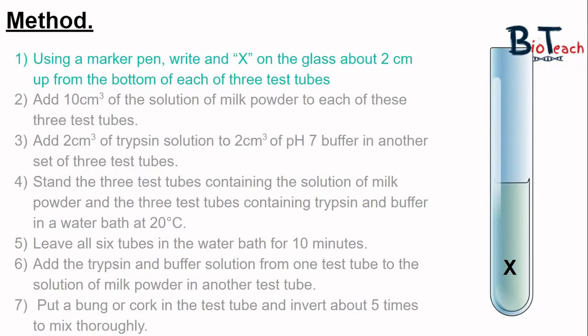The method outline here is usually what I would have up on the board for my students to refer to as they carry out the experiment. The first step highlighted is to draw an X with a marker pen on the side of the test tubes. I usually recommend you do this close to the bottom part of the tube as this is where the liquid is going to be.